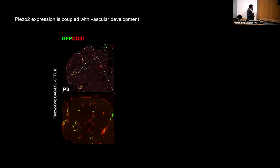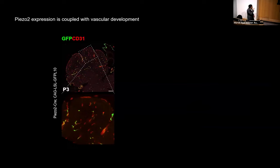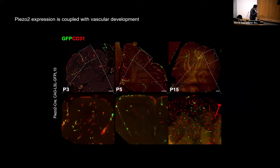Last but not least, if I may take the last minute to tell you the last data slide: this is not only important for the retina. Taking this discovery here, we are interested in the rest of the brain. We were able to uncover the same manner of Piezo2-enriched perivascular cerebellum neurons. If you ask how many Piezo2 neurons are in the entire central nervous system — not many. There are three locations, and this is the second location. During development, these perivascular cerebellar granule cells also get lit up in a similar manner.